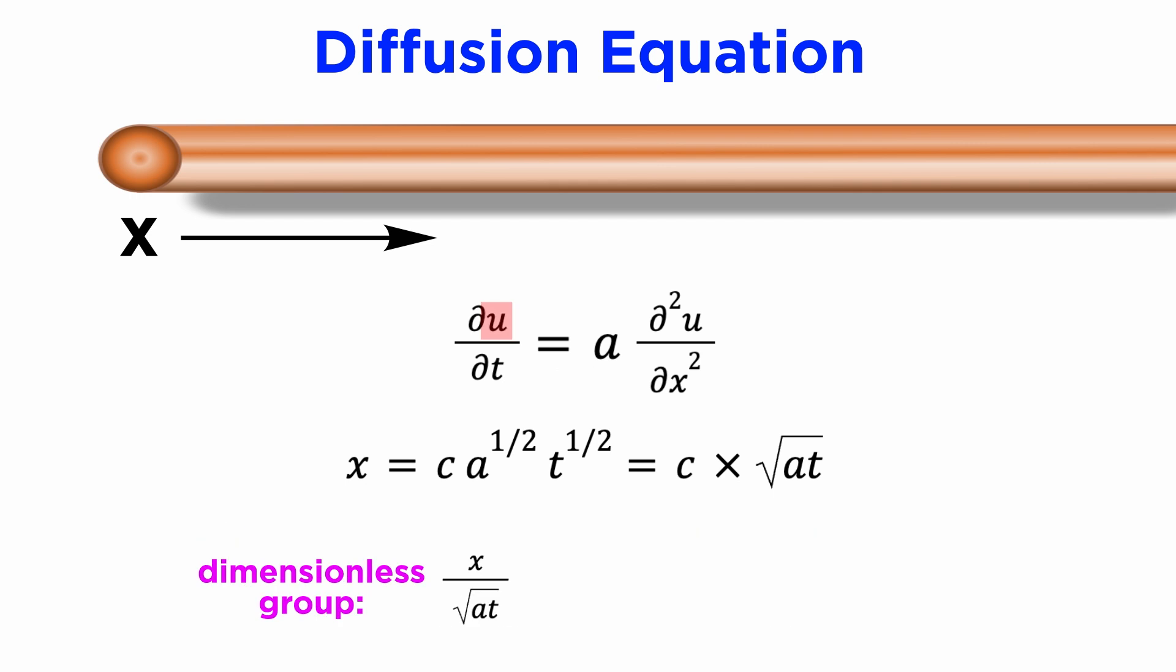We just need to do a similar thing for our other variable u, the temperature. This one is much easier because this time there is a characteristic temperature scale, and that would be T_0, the initial step in temperature at x equals zero. So our normalized temperature will be u divided by T_0.